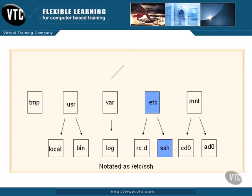You see that we have the root, and everything goes under root. You have /tmp, /usr, /var, /etc, /mnt, and many others depending on your distribution of Linux or version of BSD or Solaris. Under those you have various sub-directories, like local and bin under usr, log under var, and so forth. For example, if we have slash (root), and then /etc under that, and then the SSH directory under that, we notate that as /etc/ssh — that's our absolute path.